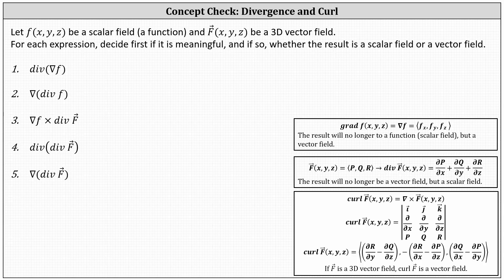Let f(x, y, z) be a scalar field or function, and F(x, y, z) be a 3D vector field. For each expression, decide first if it is meaningful, and if so, whether the result is a scalar field or a vector field.